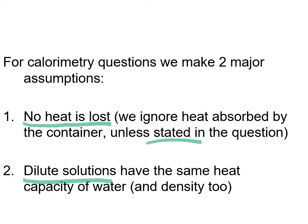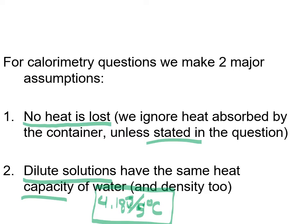For dilute solutions, we assume the heat capacity is the same as water: 4.18 joules per gram degree Celsius. That could also be expressed as 4.18 kilojoules per kilogram degree Celsius, but we'll stick to joules, grams, and degrees Celsius. We also assume the density of water is 1 gram per milliliter, so one milliliter of water equals one gram, and a dilute solution will have that same density.